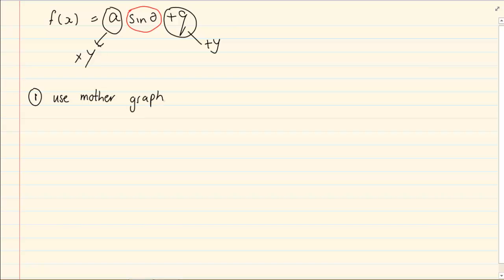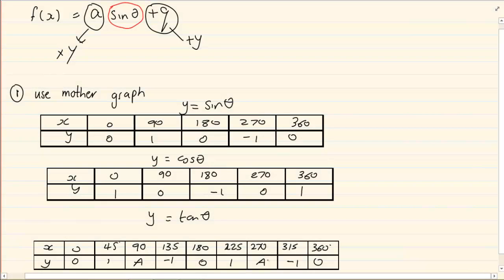So when you are drawing, you are going to use your mother graph. You need to know the standard points of all your mother graphs. When we are drawing the graphs, we are making an adjustment to the y axis. If it is in front then I would multiply to the y, but if it is at the back and it is adding then I am going to add to the y.